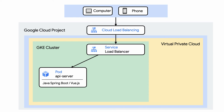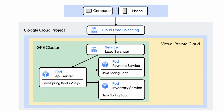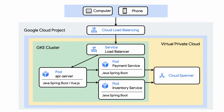This API server serves static assets to the end user, while also communicating with inventory and payment services to dynamically show users products and process payments, respectively. These services also run as Kubernetes pods. The app's products are stored in a Cloud Spanner database before being served dynamically.